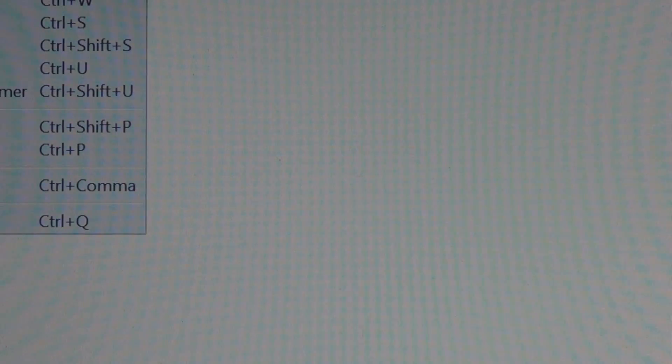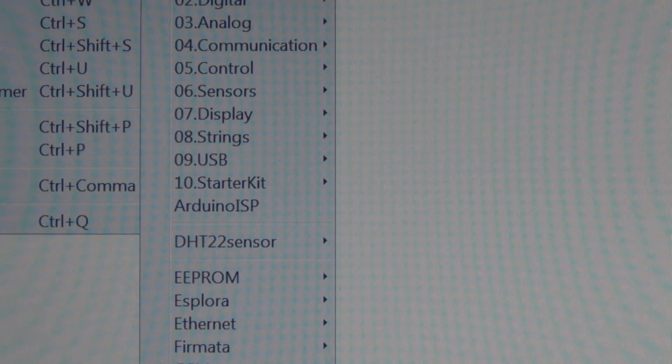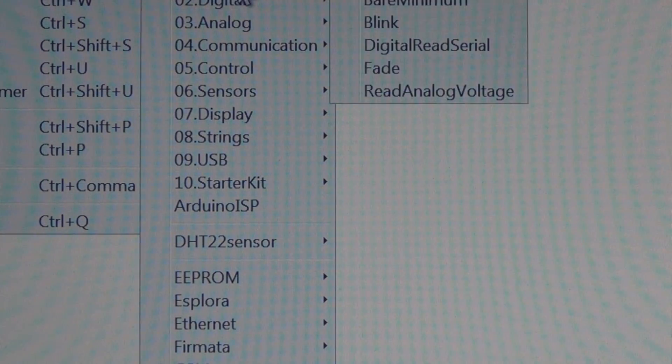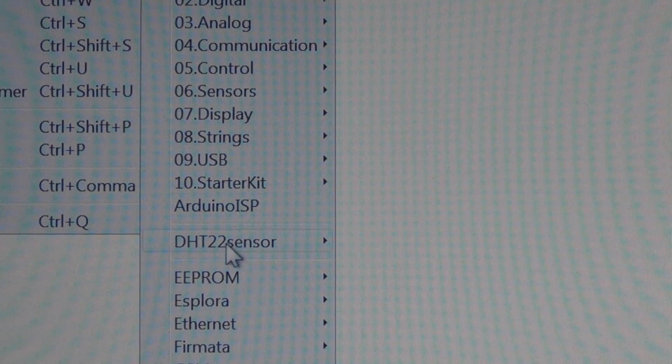So once you pull that library into the Arduino IDE here, you'll have access to the library for that particular part. In this case, the sensor. And also an example sketch. So you can see here, this didn't used to exist. I had to pull this into the IDE into the library folder. So I have this sketch here for DHT tester.